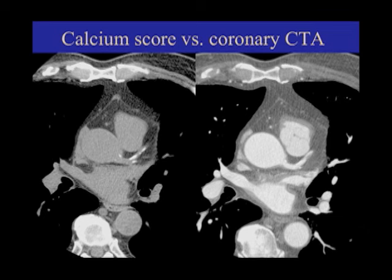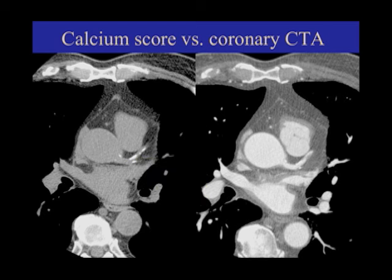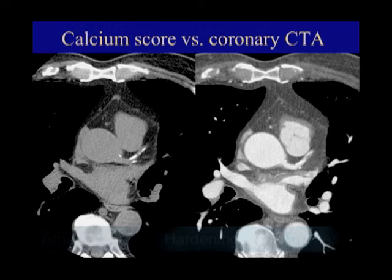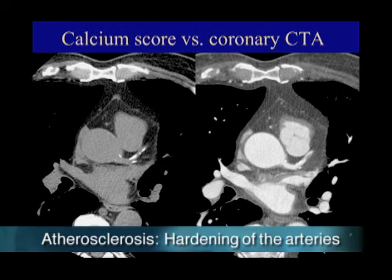What we're seeing here is actually quite a bit of calcium in the coronary arteries. I can't tell you that this right here is causing a blockage, but I can tell you that this person has a lot of atherosclerosis. So they're at pretty high risk for developing a problem — I don't know where that problem is going to happen, but their chances are relatively high.